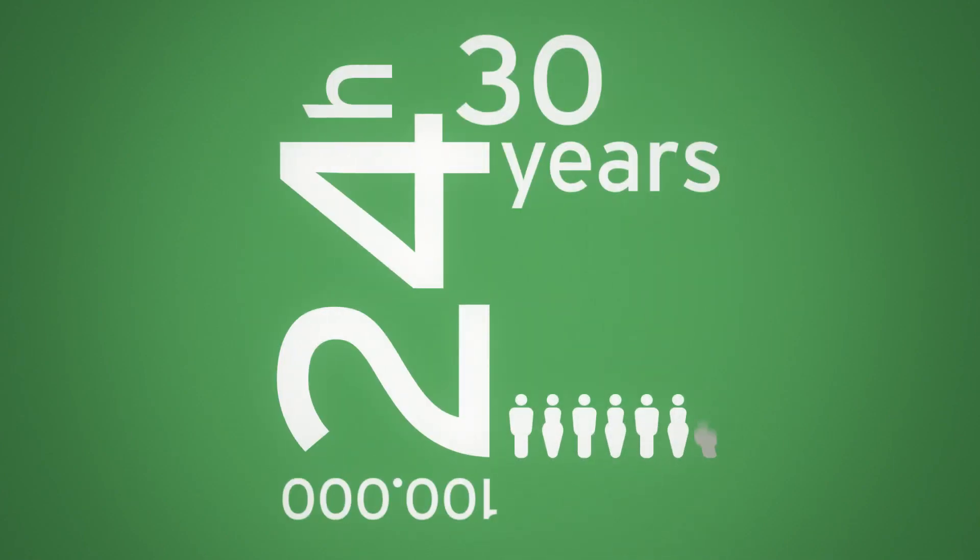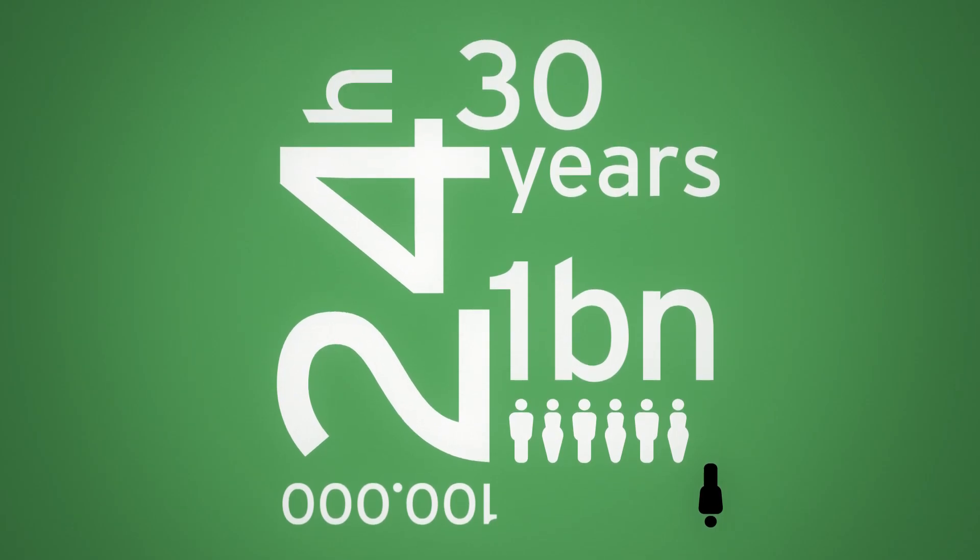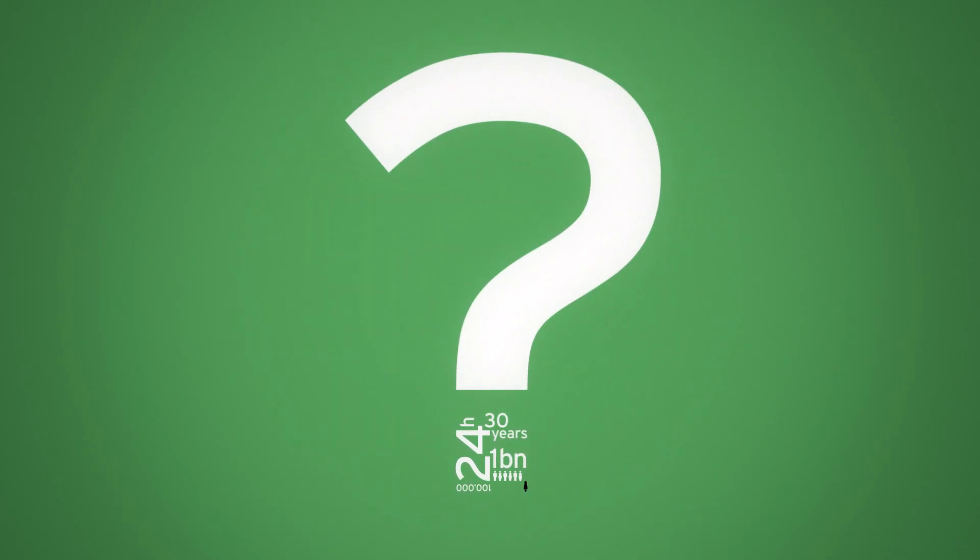100,000 people are dying every day. Within 30 years, one in seven, a billion people, will have died because of the virus. Now, how much money should world leaders put into research to develop an antidote?